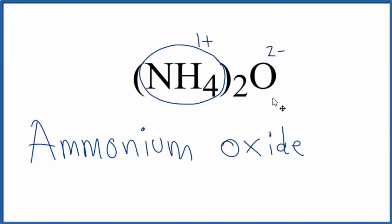but because this oxygen has a 2- ionic charge, you're going to need two of these ammonium ions, this two right here, to get 2+ to balance the charge on the oxygen, which is 2-.